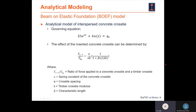The governing equation for the BOEF model is shown in the equation above. After calculation, the effect of the inserted concrete cross tie can be determined from the center equation. In this equation, FCT divided by FQ0 is the ratio of force applied to a concrete cross tie versus a timber cross tie. Kappa is the spring constant of the concrete cross tie, A is the tie spacing, K is the timber tie modulus, and beta is the characteristic length of the track.